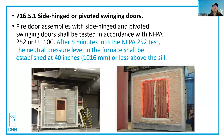The part in blue states that after five minutes into the NFPA 252 test, the neutral pressure level in the furnace shall be established at 40 inches or less above the sill. This is because the NFPA 252 test could be either neutral or positive pressure. The architect would have to specify, and you would look in your wood and metal door specifications just to confirm that yes, it should be UL 10C.